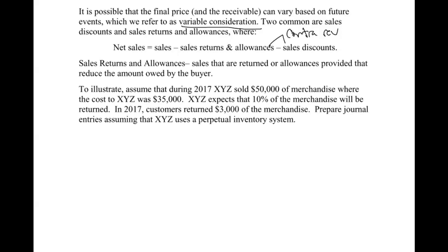Sales returns and allowances are sales that are returned by a customer, or allowances provided that reduce the amount owed by the buyer. So we have a company that sold $50,000 of merchandise, where the cost — the cost of goods sold — would be $35,000. They expect 10% to be returned, which means $5,000 in expected returns. In 2017, the year of the sale, $3,000 was returned, which means we'll have to account for the $2,000 still remaining.